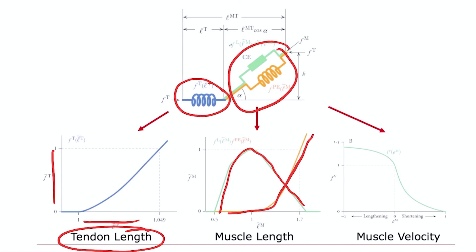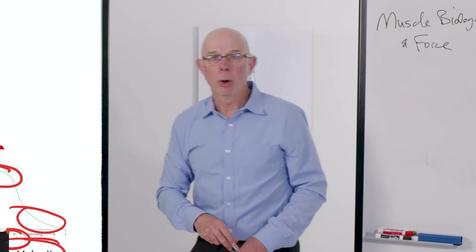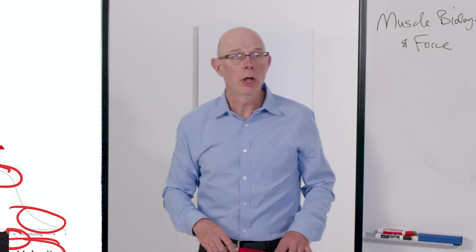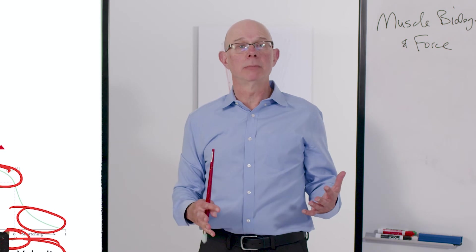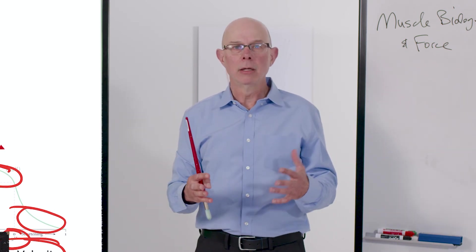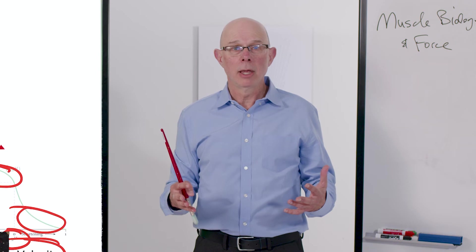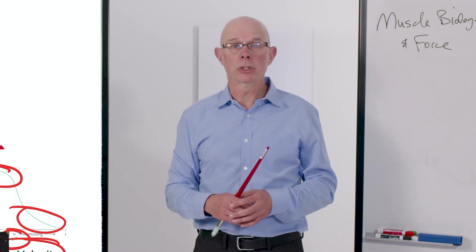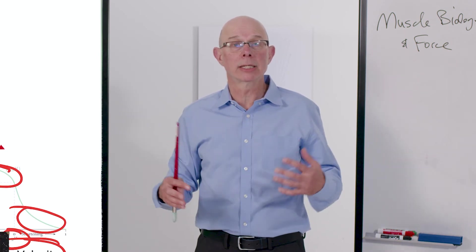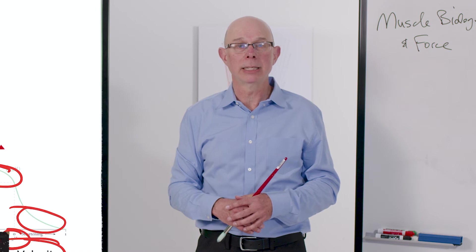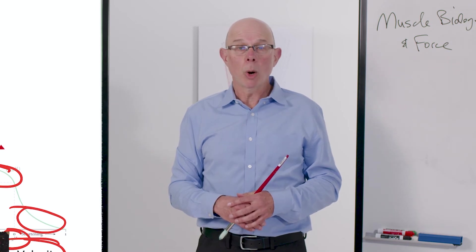And muscle also has this force-velocity relationship we talked about as well. Here's velocity, here's force, here's shortening muscle, here's lengthening muscle. And what we really need to take into account when we build engineering models of muscle is all of these factors: the length, the velocity of muscle that are going to have a dramatic influence on muscle force, and the series elasticity provided by tendon.